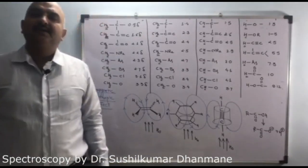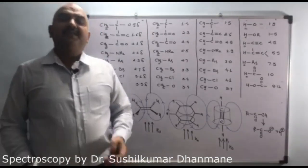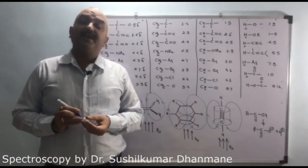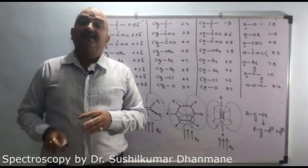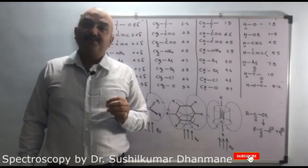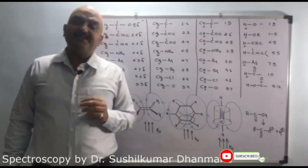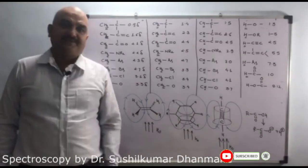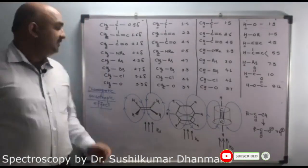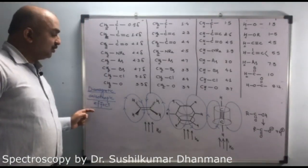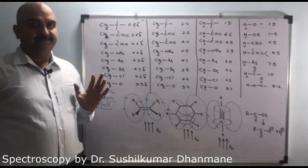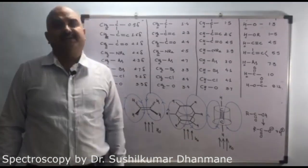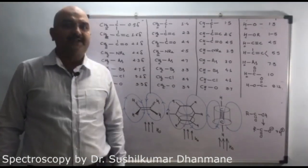Hello students. In this video we are going to discuss some of the most abnormal trends in the value of chemical shift, known as the diamagnetic anisotropic effect. Anisotropic effect means an unusual effect that we are getting.